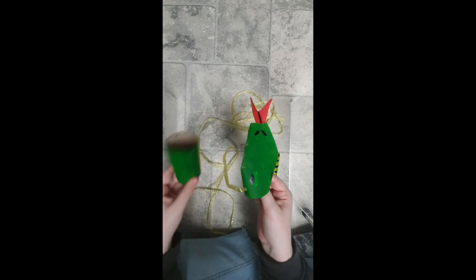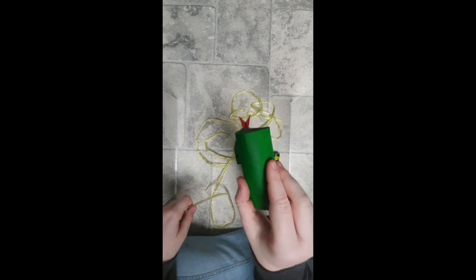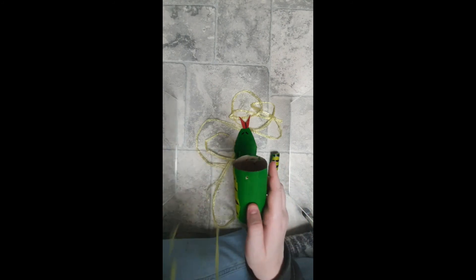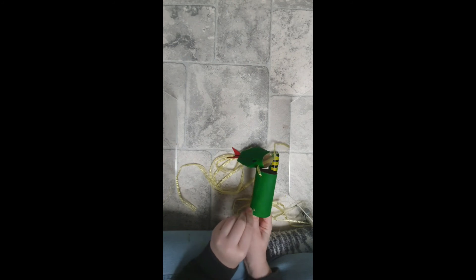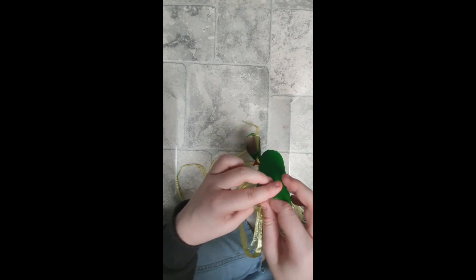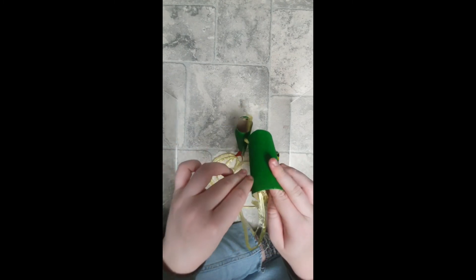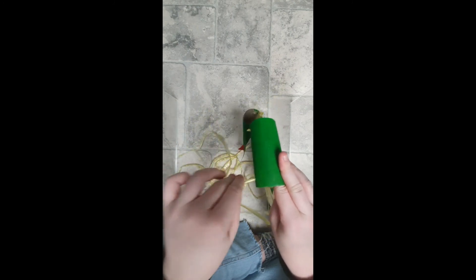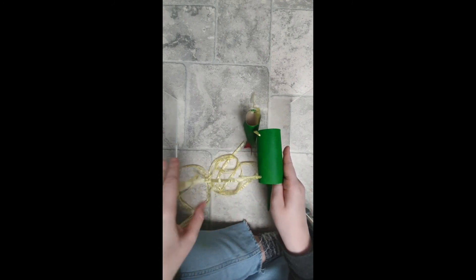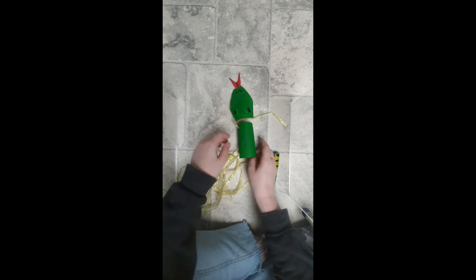Now that you have it looped through, you're going to get your body. Make sure the belly is face down. You're going to get the string again and loop it under this, through that, and now we loop through here, through this hole. Loop your string through, so it starts coming together.